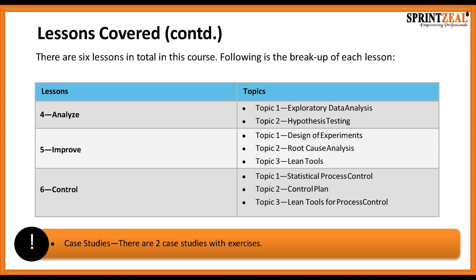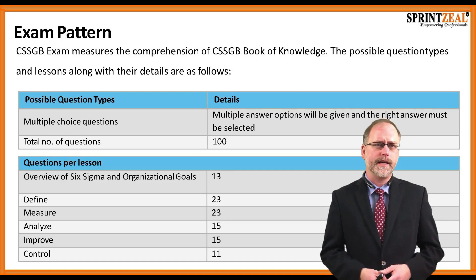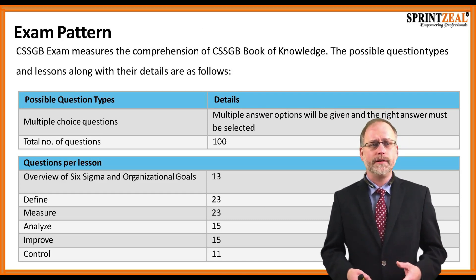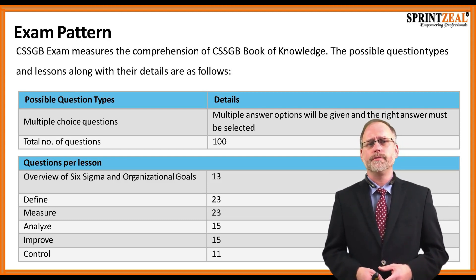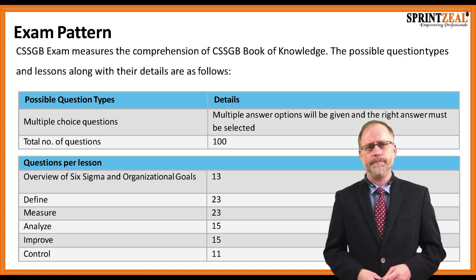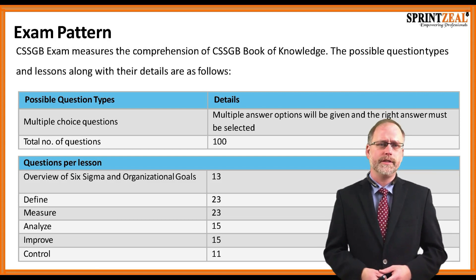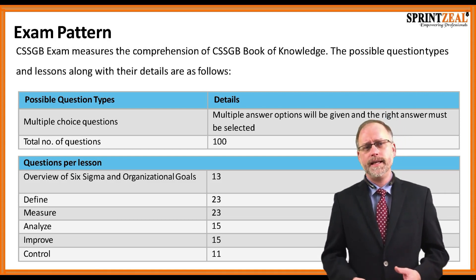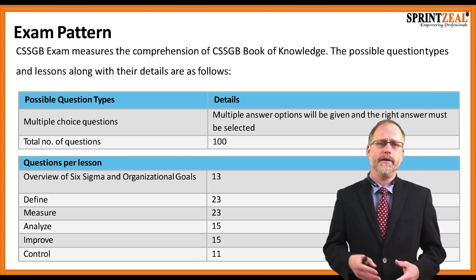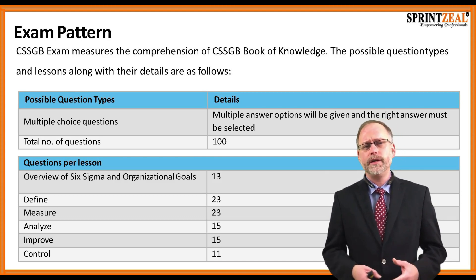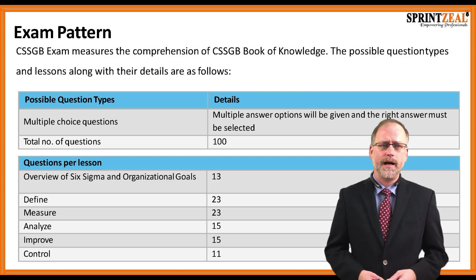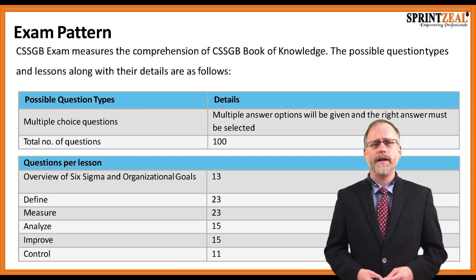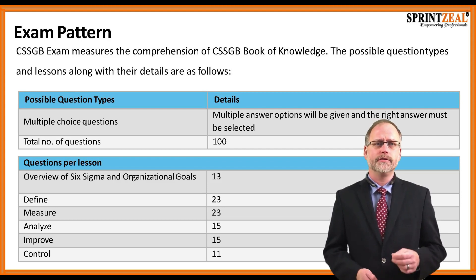There are also two case studies with exercises that we'll be going through throughout this course. The Six Sigma Greenbelt exam measures comprehension of the certified Six Sigma Greenbelt book of knowledge. It consists of 100 multiple-choice questions: 13 on the overview of Six Sigma and Organizational Goals, 23 for both the Define and Measure phases, 15 for the Analyze and Improve phases, and 11 for the Control phase.